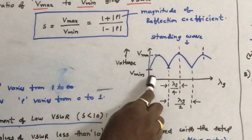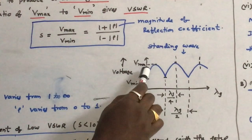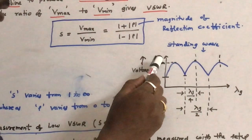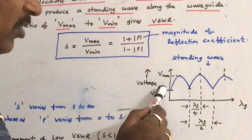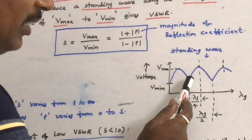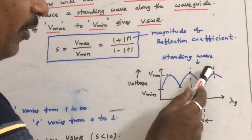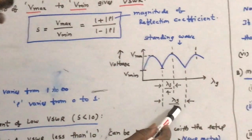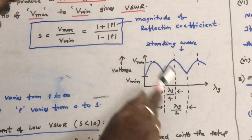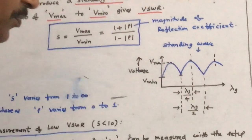This is the general standing wave pattern, which is the combination of incident and reflected waves. V maximum and V minimum of the standing wave are identified. The distance between two minimums is λg/2, the distance between two maximums is also λg/2, and the distance between V max and V minimum is λg/4, where λg is the guide wavelength.